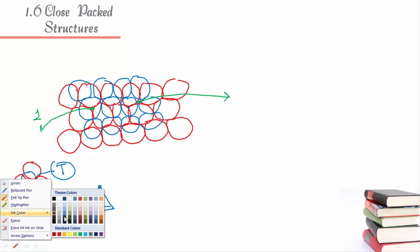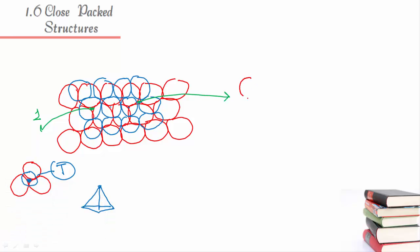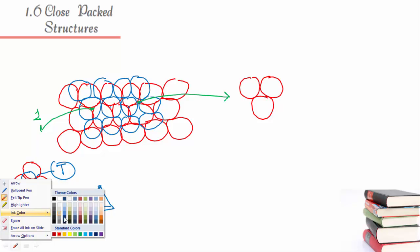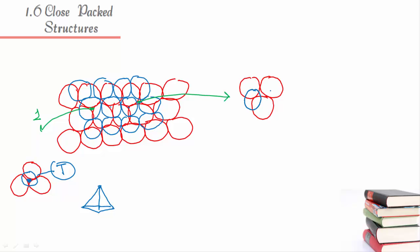If you look at the other void, there are three balls below and three balls above it — it is an open void on both sides. This is called an octahedral void, because it is surrounded by six atoms. The tetrahedral void is surrounded by four atoms.